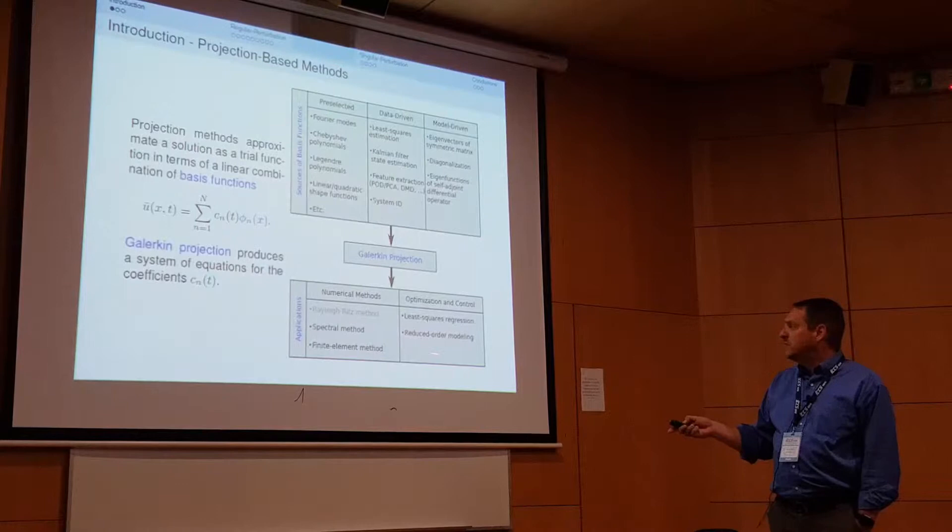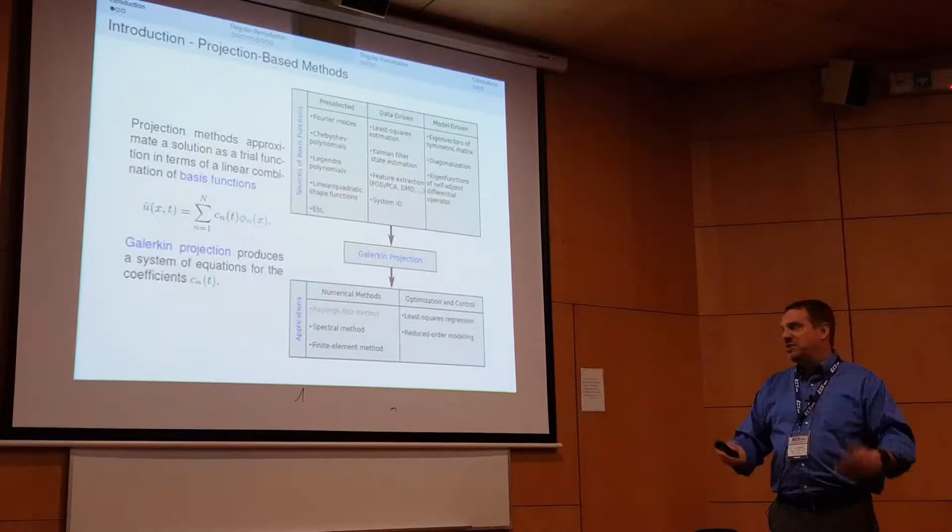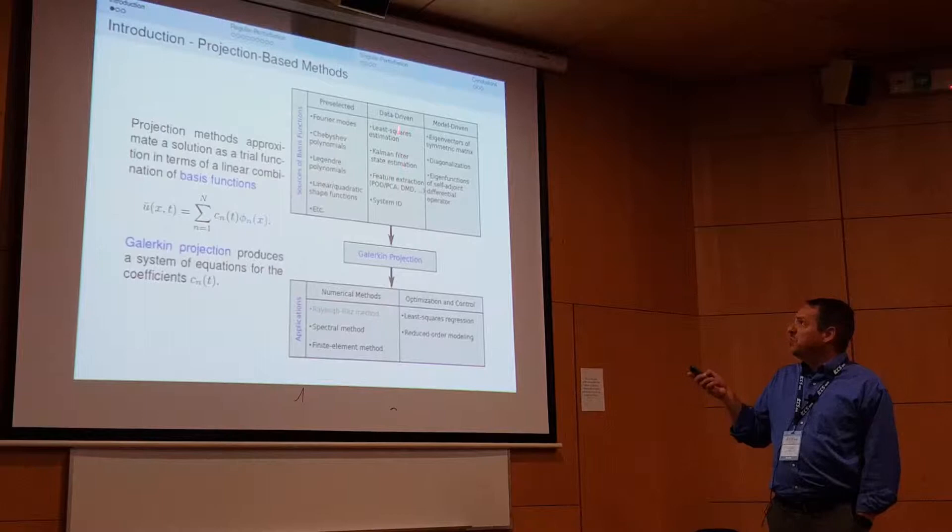The data can come from experimental or numerical sources. Through Galerkin projection, this gives us a reduced order model that we can then use in control or optimization settings.